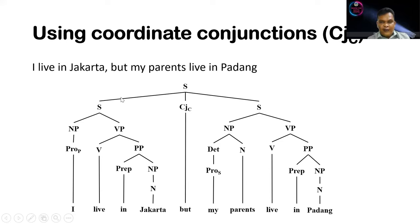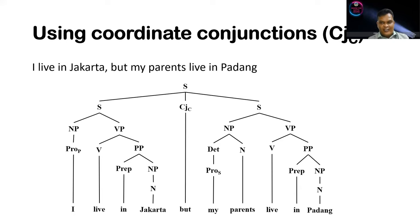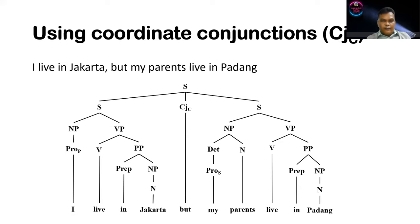What makes this analysis more complicated is determining the first branch of the tree diagram. You can see that the sentence has three branches: sentence, coordinate conjunction, and sentence. Once you are able to identify these first branches, the rest of the work will be very easy, because what we analyze in each clause is just like analyzing a simple sentence.